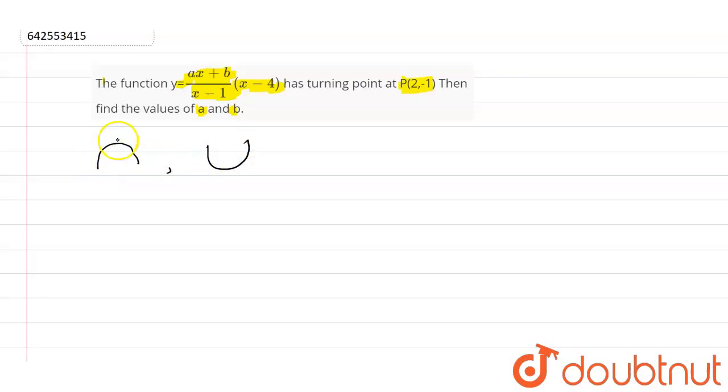And the turning point is P. So here slope will be 0. From this we can say that Y' at P(2, -1) is equal to 0.